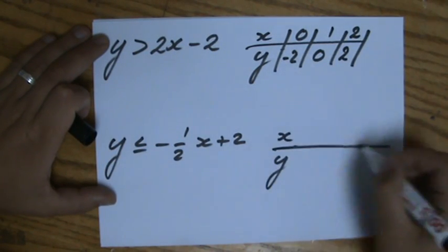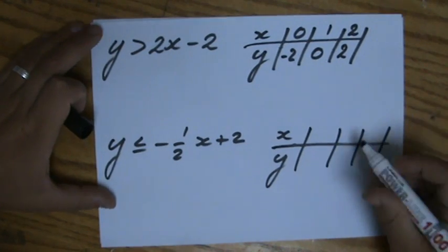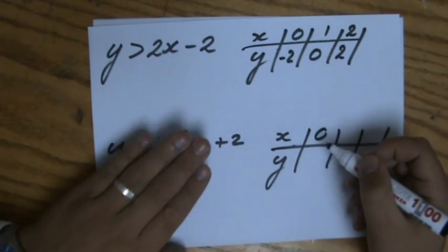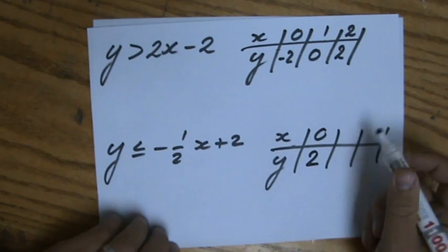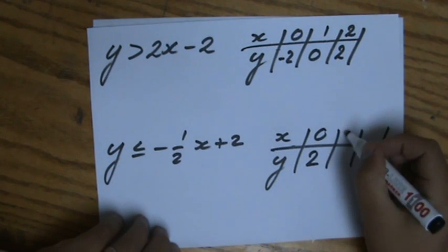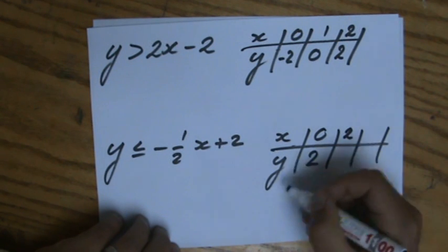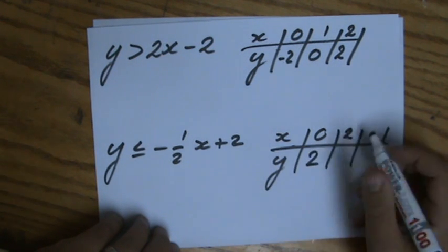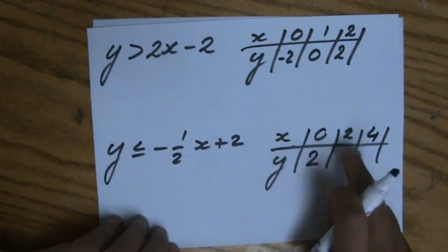I'm going to do the second inequality as well. I'll take 0, the y-intercept is 2. Now because it's a fraction and the denominator is 2, I'm going to take multiples of 2 so I don't get any fractions in my y value.